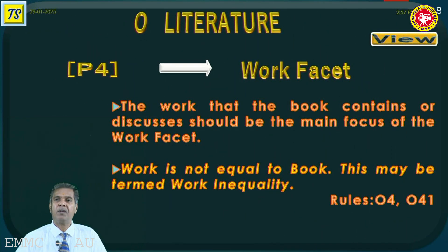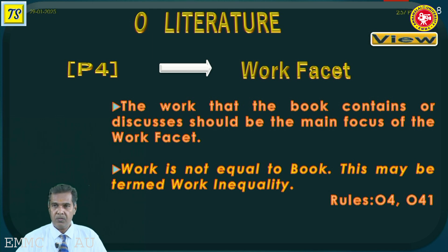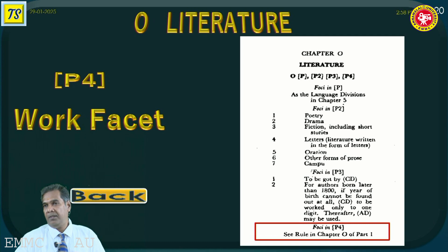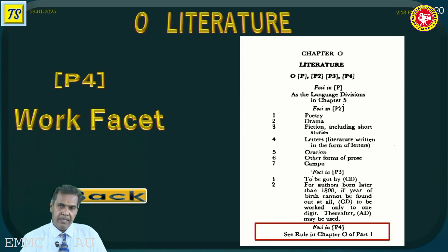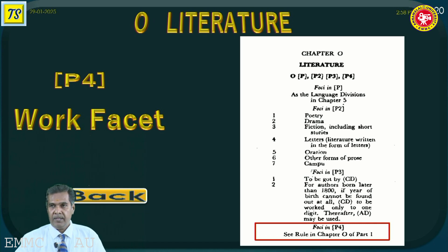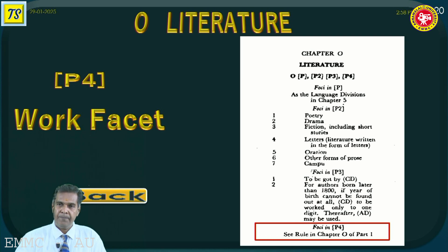Level four is the work facet. The work that the book contains or discusses should be the main focus of the work facet. Work is not equal to book — do not forget. This is termed as work inequality. The work facet is provided in the schedule under the personality facet level four. Ranganathan has provided the instruction: see rules in chapter O of part one. That means no enumerated numbers are available in the schedule for the P4 part. Ranganathan has provided rules, and with the help of these rules, anyone can structure the notations for the work facet. The author's work number should be collected and calculated based on the rule provided under facet P4.